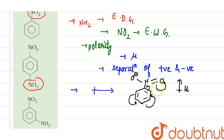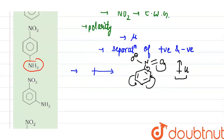As we can see, there will be a separation of charge in the system. The ring will acquire a partial positive charge and the nitro group will acquire a partial negative charge. So the overall dipole moment will be in the upward direction, as shown by this arrow.